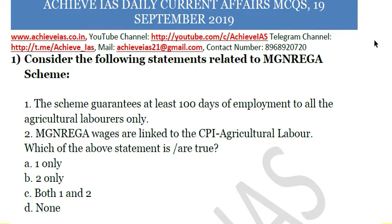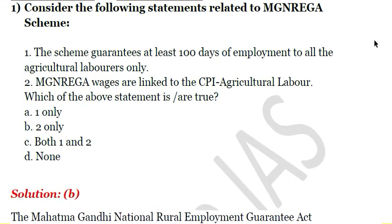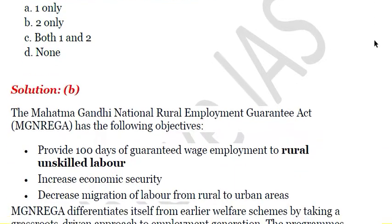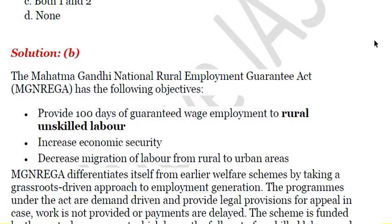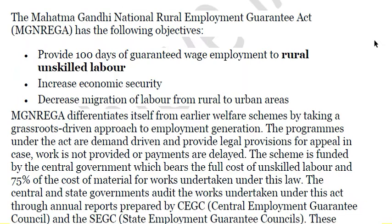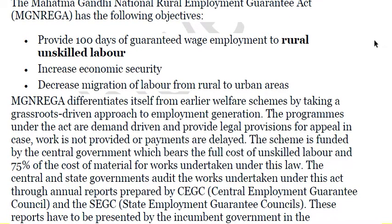The scheme is available to all individuals who are willing to do this work, so a minimum of at least 100 days of employment is available to rural unskilled labor. Its purpose is to increase economic security. It is a rights-based approach in which 100 days of guaranteed wage employment will be provided to rural unskilled labor if they are willing. It also ensures a decrease in migration of labor from rural to urban areas. The programs under the act are demand-driven and provide legal provisions for appeal in case work is not provided or payments are delayed.